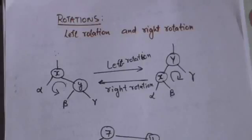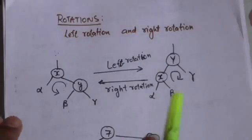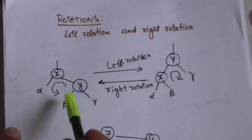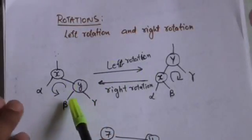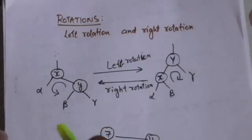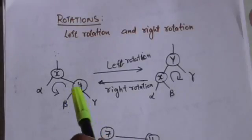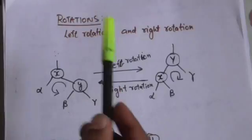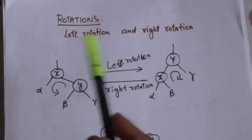Hello friends, welcome back. In this tutorial we will study about rotations. A rotation is a local operation in a binary search tree that preserves the binary search tree property. There are two types of rotations: left rotation and right rotation.